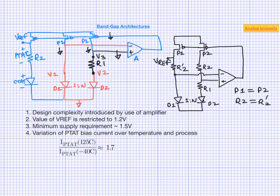If we also add process variation of the resistors, the ratio of maximum to minimum bias current can be more than two. No single architecture can address all these issues, but there are alternate architectures which can address some of them.